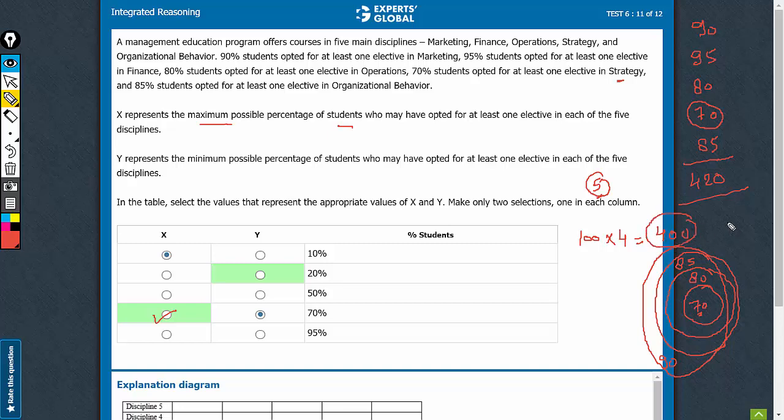The 400 is the maximum value that can be reached without using the case of any student opting for five electives. But still, this 400 is 20 shy of 420, the sum of these values. That means that 420 minus 400. At least 20 students have to opt for all of the five electives. And therefore, for the second column, the answer is 20%. That's the minimum overlap for reaching a value of 420 from 100 students.